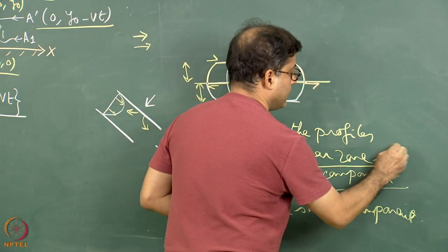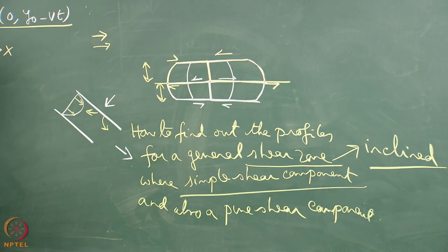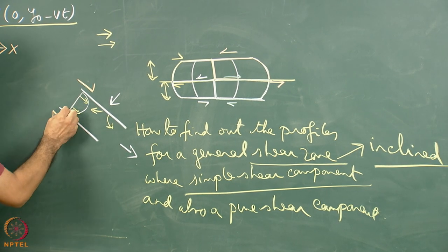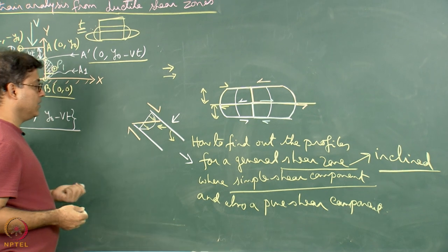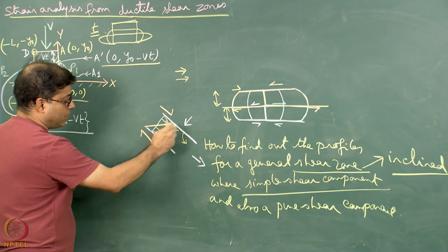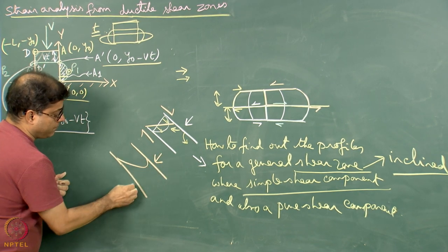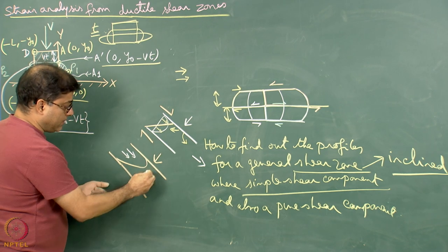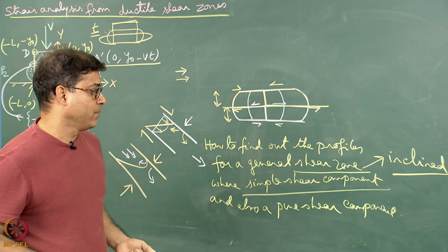This is for a general shear zone which is inclined — the most general case. Along with that, we can add another simple shear component. Now if these orange half arrows are working, we already know what the profile would be. What would be the resultant profile for this general shear zone becomes a difficult question to answer. Partially it can be solved: the combination between the white parabola and the orange straight line gives a certain velocity profile, and further there is a pure shear component with hyperbolic pattern. What would be the resultant profile remains an open question for the viewers.